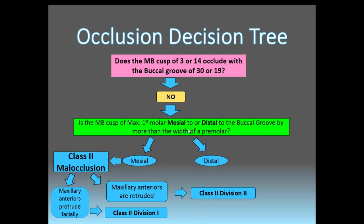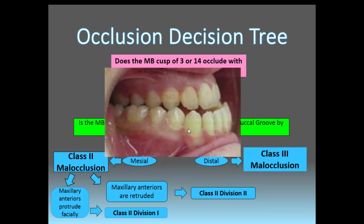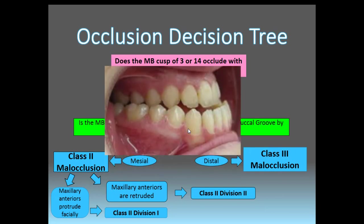If the mesial buccal cusp of the maxillary first molar is distal to the buccal groove by more than the width of a premolar, you have class 3 malocclusion. That gives the typical bulldog look where the mandibular teeth are more labial than the anterior teeth.